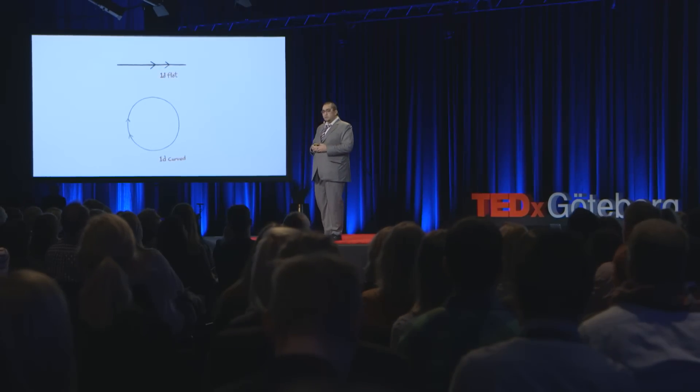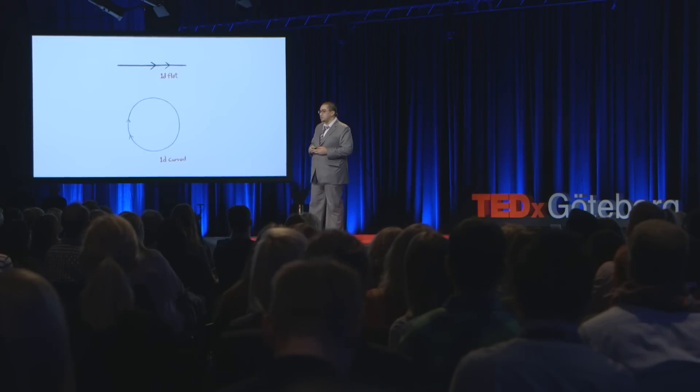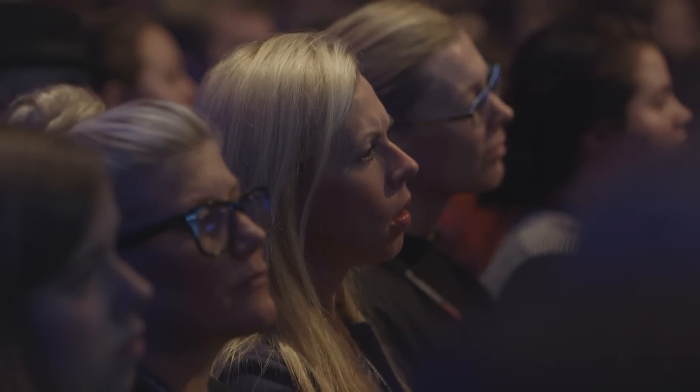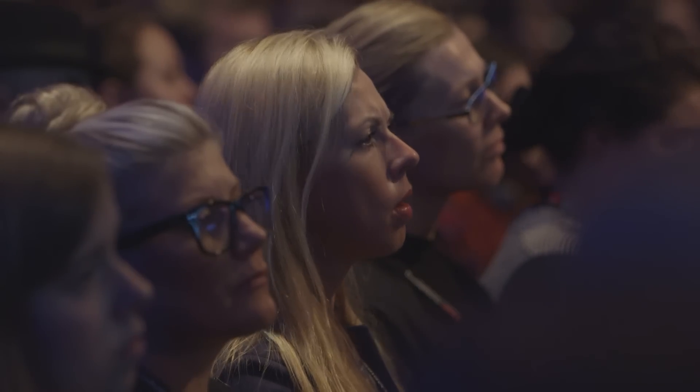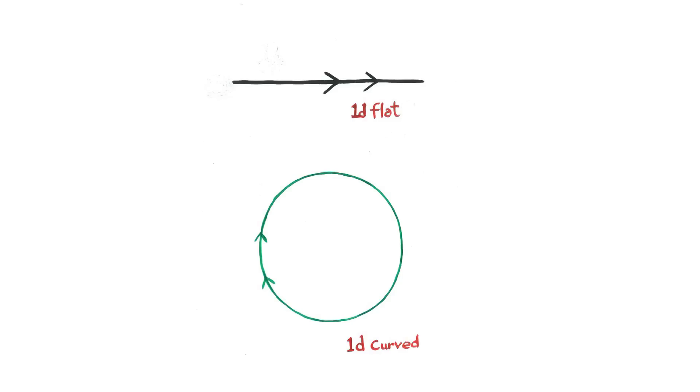What are parallel universes? Parallel universes exist in extra dimensions. To understand that, we have to understand what dimensions are, what extra dimensions are. To understand extra dimensions, let's start from one dimension. What is a one dimension? Well, the simplest example of a one dimension is just a line, a straight line. You just have one way to move around it. And if you keep going, you just keep going around that line.